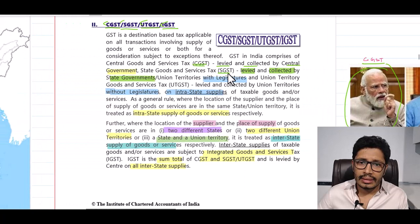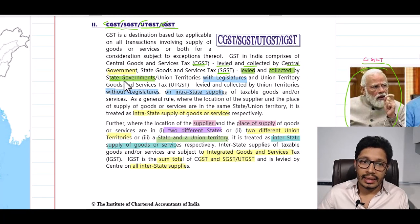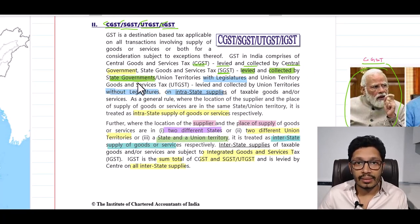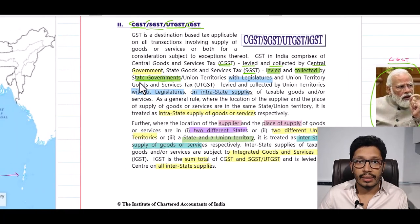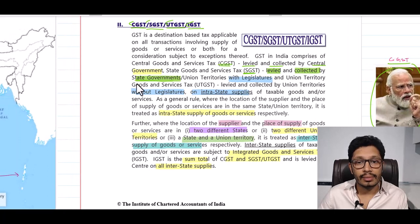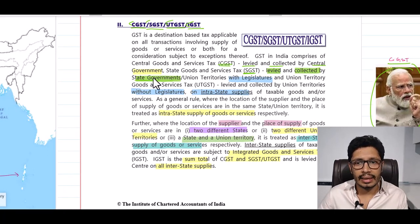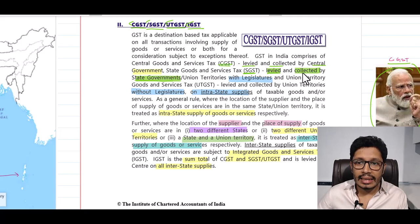SGST is collected by state governments. For example, the Madhya Pradesh government, Rajasthan government, Tamil Nadu government, and West Bengal government — they will levy and collect SGST. SGST is levied and collected by state governments.